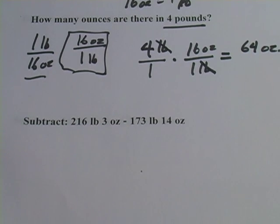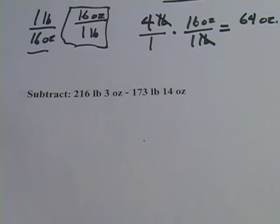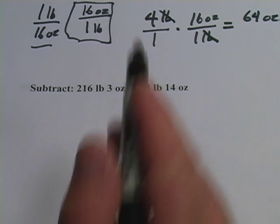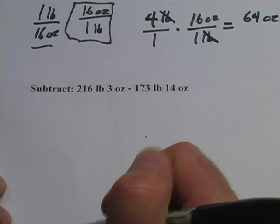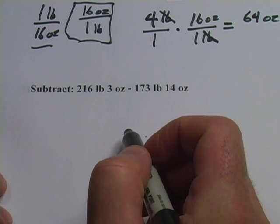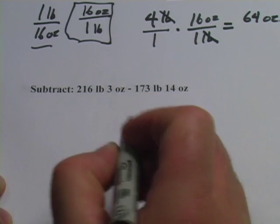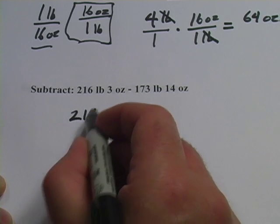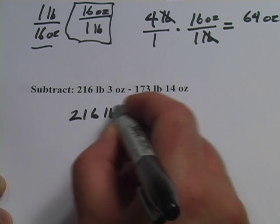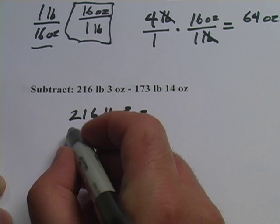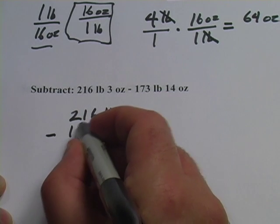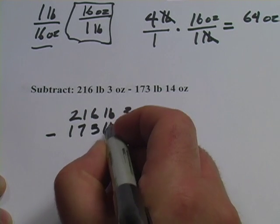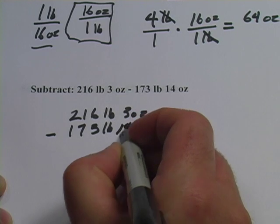This next one asks us to subtract 216 pounds 3 ounces minus 173 pounds 14 ounces. So I'm going to write it out like a traditional subtraction problem here. 216 pounds 3 ounces on the top minus 173 pounds 14 ounces here.